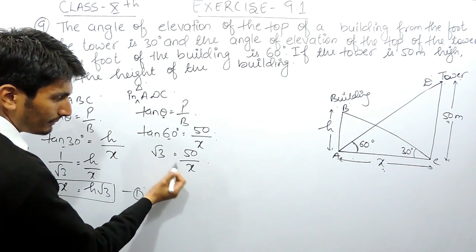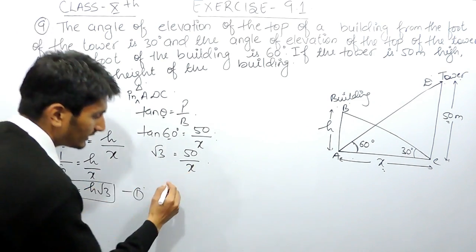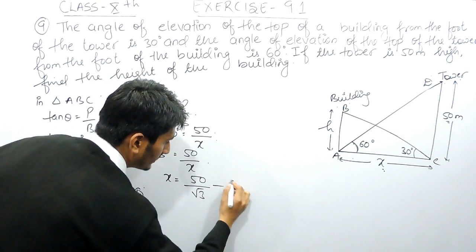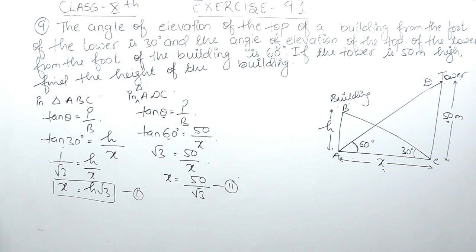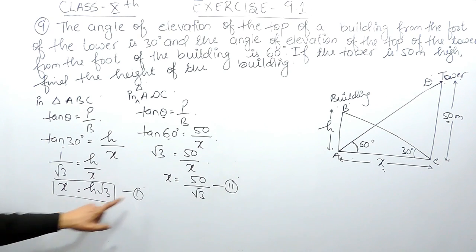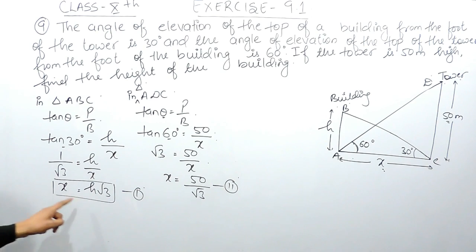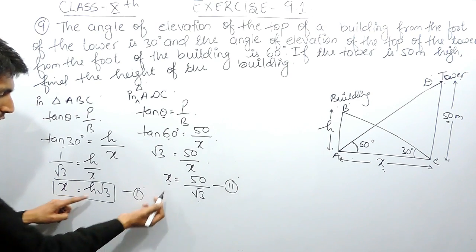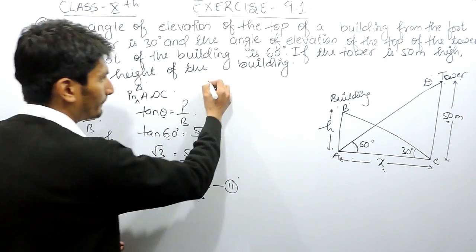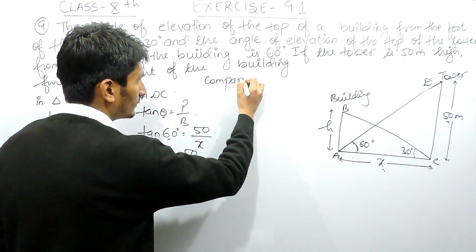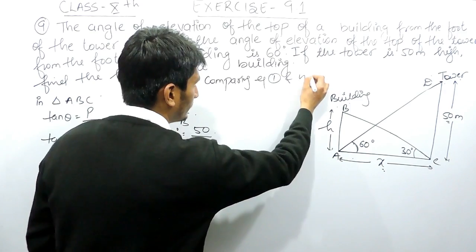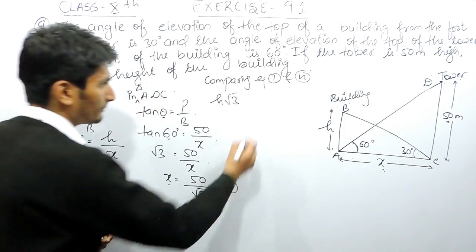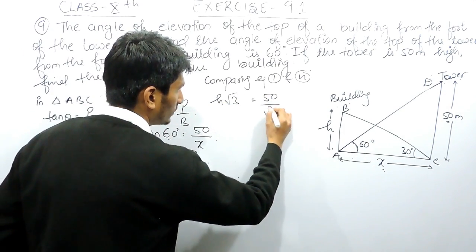Cross-multiplying gives x = 50/√3. This is our second equation. Now to find the value of h, I compare these two equations. The left-hand side (x) is equal in both cases, so the right-hand sides must also be equal. Therefore, comparing equation 1 and equation 2: h√3 = 50/√3.